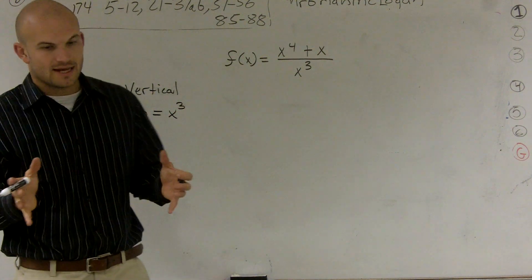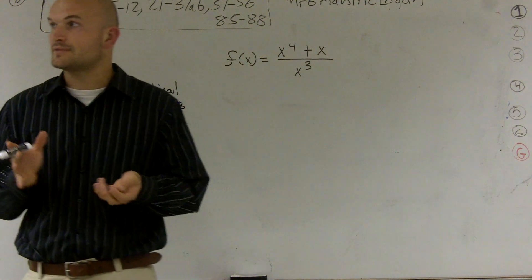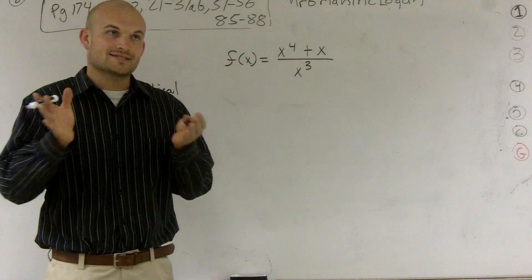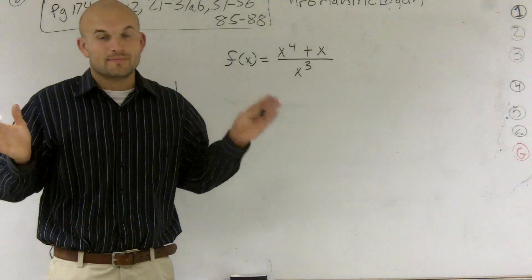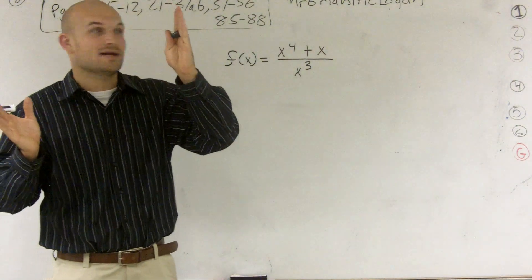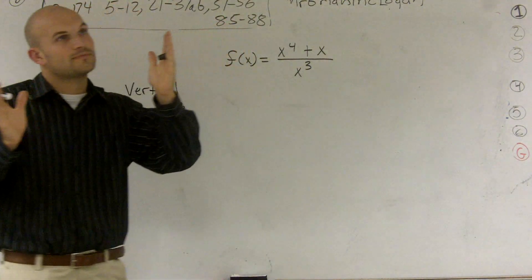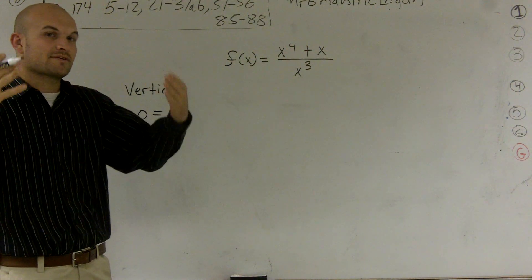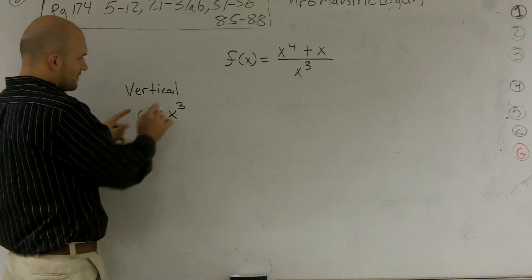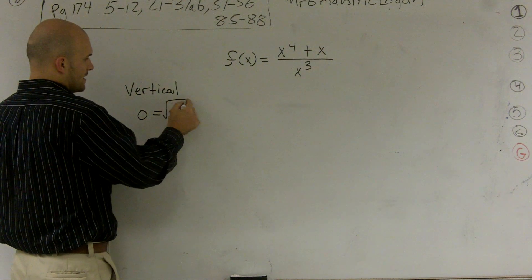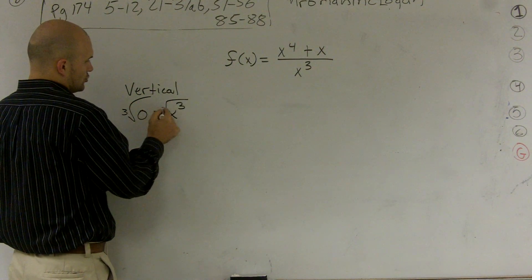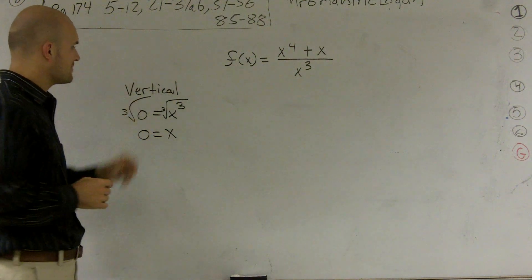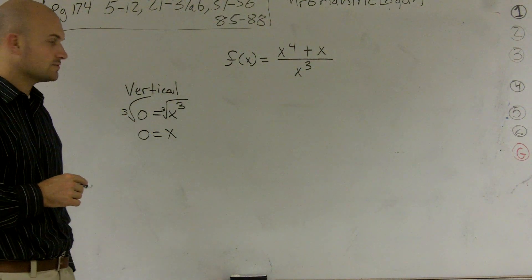Because an asymptote, remember, is a part that's not defined in your graph. It's something where your graph is going to attract to and approach without bound, meaning it infinitely keeps on approaching your asymptote, which is like a little dotted, invisible line, but it's never going to touch it or cross it. So if I was going to set this equal to 0, I'd take the cube root of both sides, and I get 0 equals x. Or, therefore, I can say my vertical asymptote is when x equals 0.